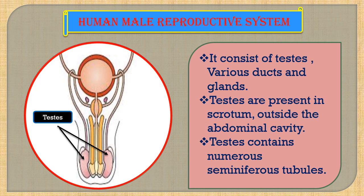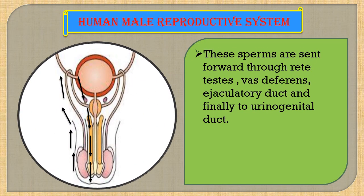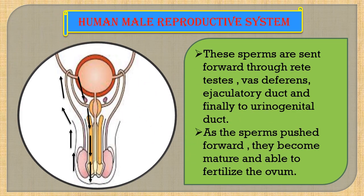The testes contain numerous seminiferous tubules. The sperms are produced in the testes and are sent forward through the rete testis, vas deferens, ejaculatory duct, and finally to the urinogenital duct. You can see on your screen the path by which these sperms are transferred out of the body. As the sperms are pushed forwards, they become mature and able to fertilize the ovum.